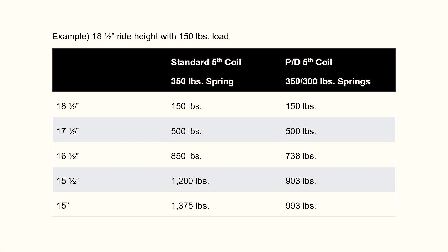From the chart on the screen, you can see the difference between a standard fifth coil versus a PD fifth coil. We're going to start at 18 and a half inches of ride height. We've got 150 pounds of preload at ride height, so we're starting with that number at 150. After one inch of travel it goes to 500. Second inch of travel it's 850. Third inch of travel is 1200. And three and a half inches of travel is 1375. That's just with the 350 spring adding together. But the problem is most dry slick racetracks can't stand 1375 pounds of spring rate, and what happens is the rear tires break loose.